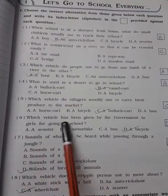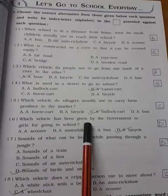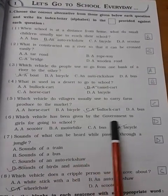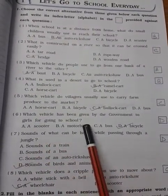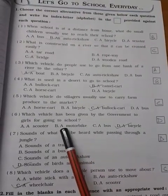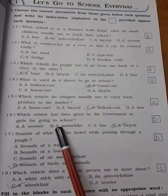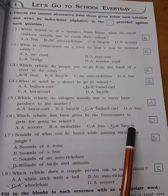Which vehicle has been given by the government to the girls for going to the school? So government gives one gift to the girls to go to school: a bicycle.